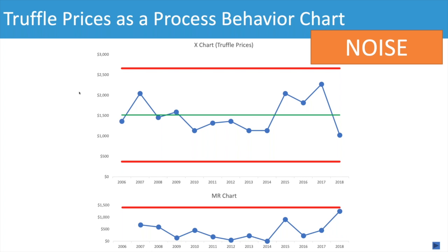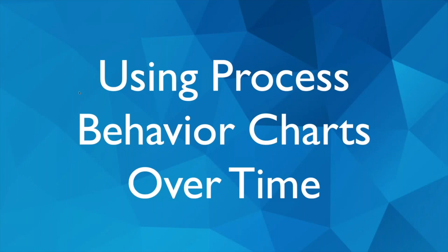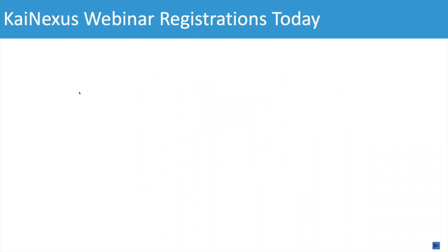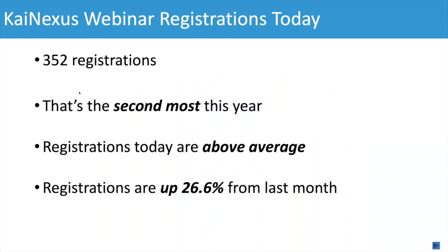We can use process behavior charts retrospectively to look back over time. We can also use them moving forward — once we've established a chart and add data points, we can ask if it's a signal or noise, which helps us understand how to improve the system. Looking at webinar registrations for today, we had 352 registrations — the second most of any webinar this year. We could describe that as above average, or that registrations are up 26.6% from last month. But those statements don't give us much insight into system performance.